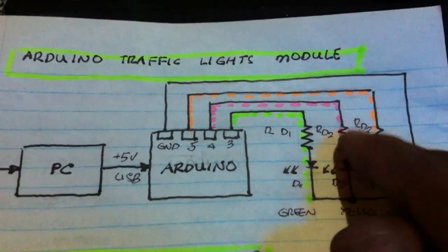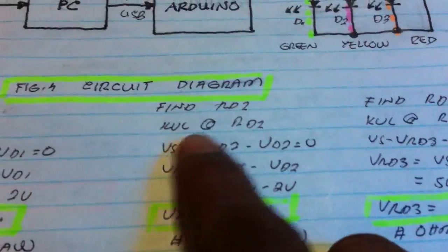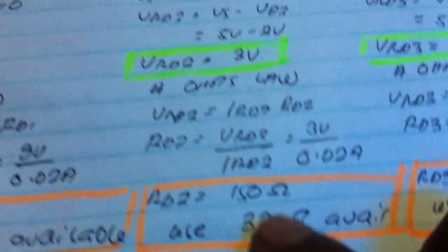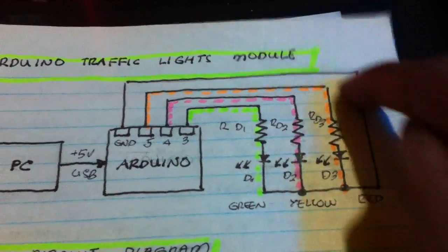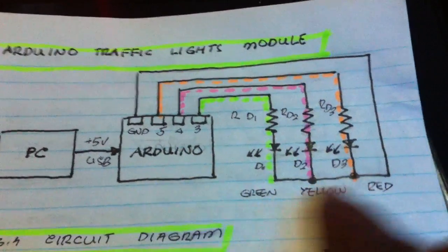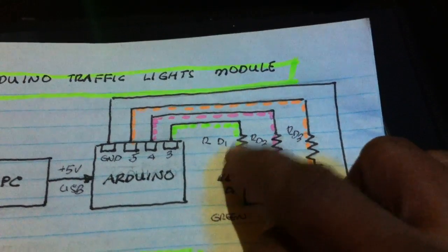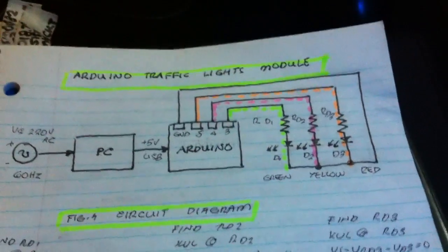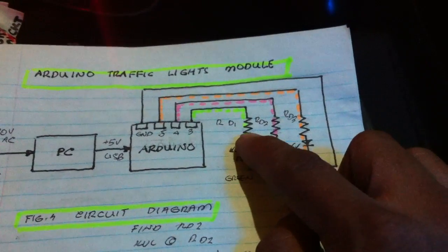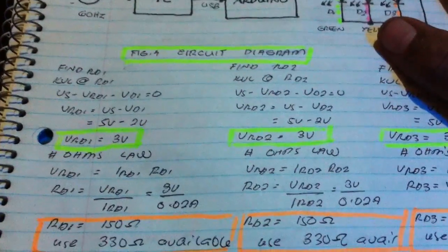For terminal 4, we use the same formula. We also get 3 volts and 330 ohms. Similarly, for terminal 5, the current flows through to ground and back to the Arduino — we also get 3 volts and 330 ohms. So all resistors are 330 ohms each to protect the LEDs. We have completed the current-limiter resistor calculation using KVL and Ohm's law.